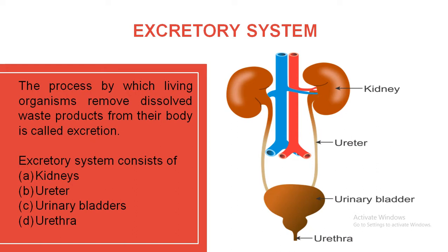Now what is excretion? As you know that by performing different life processes your body is going to generate some toxic substances which must be removed out from your body. The removal of this waste product from your body is known as excretion. The excretory system means the organs which involve and perform this excretion process.